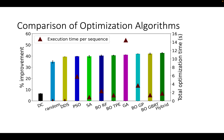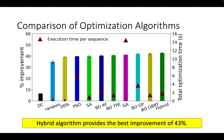In this slide, we compare different optimization algorithms. On the left y-axis, we have the percentage improvement in P95 latency over the default configuration. On the right y-axis, we have the total time the optimization algorithm takes to emit a config. As we can see, the hybrid algorithm provides the best improvement of 43%. The hybrid algorithm is a combination of Bayesian optimization and DDS, where Bayesian optimization is initialized with the configs that DDS searches.